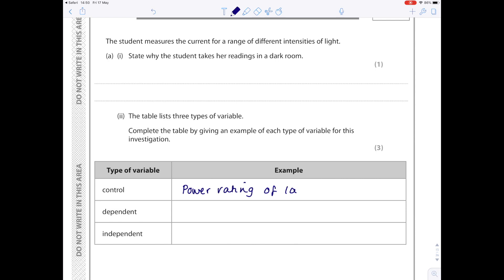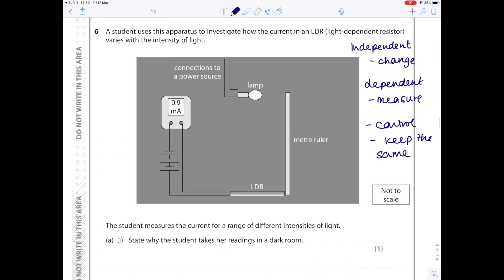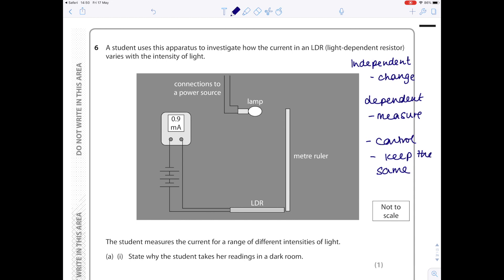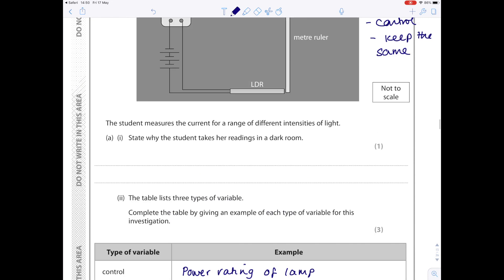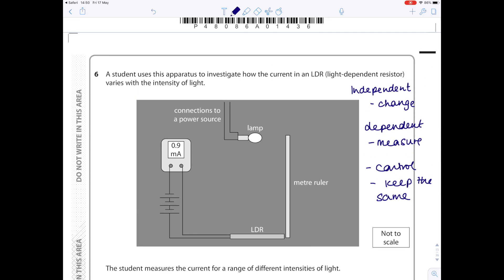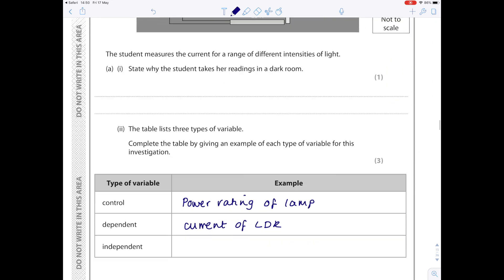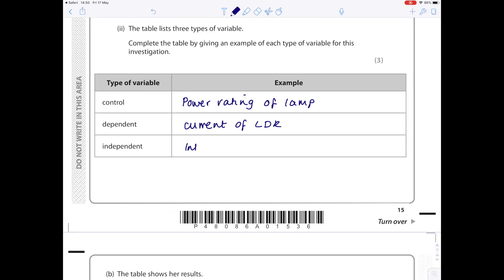Because obviously if we alter how strong or how bright that lamp is, then it's going to screw up our experiment. The dependent variable, which I've already written, is what we're measuring. So what are we measuring here? Well, we're measuring the current of the LDR. And then lastly, the independent variable: what are we changing? Well, it says here we're investigating how the current in an LDR varies with the intensity of light, so we're obviously altering the intensity of the light.